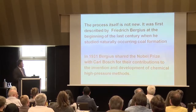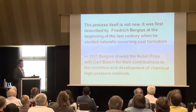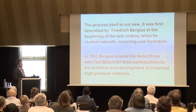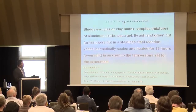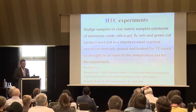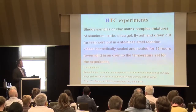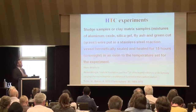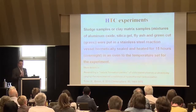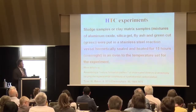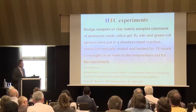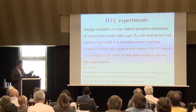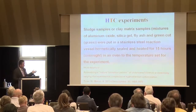The process is not new. It was first described by Friedrich Bergius in the last century, who received the Nobel Prize together with Karl Bosch for contributions to chemical high-pressure methods. We applied hydrothermal carbonization experiments to sewage sludge samples and tried to resemble a clay matrix by mixing aluminum oxide, silica gel, fly ash as a dioxin source, and green-cut hay as a carbon matrix — plus water — in a steel vessel heated to different temperatures. More details are in a paper published last year in Chemosphere.